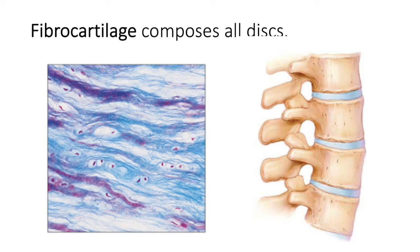Fibrocartilage composes all discs. There are many discs in the body — the intervertebral discs, the menisci in the knees, and also the pubic symphysis, which is a single disc between the two pubis bones. This specific type of cartilage resists compression, and it has nice parallel bundles of fibers.